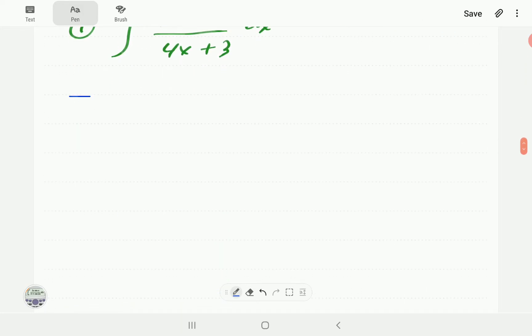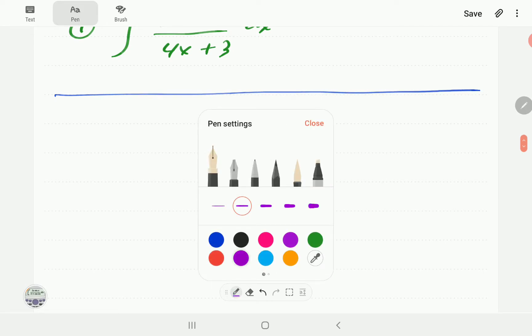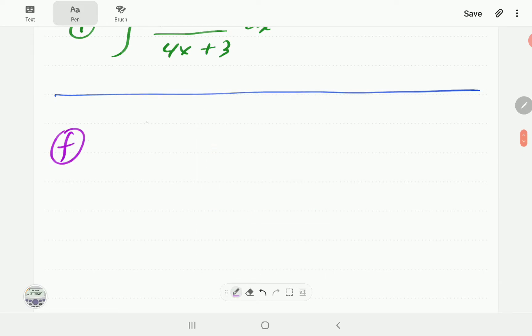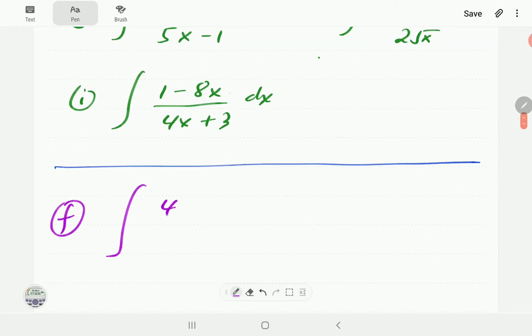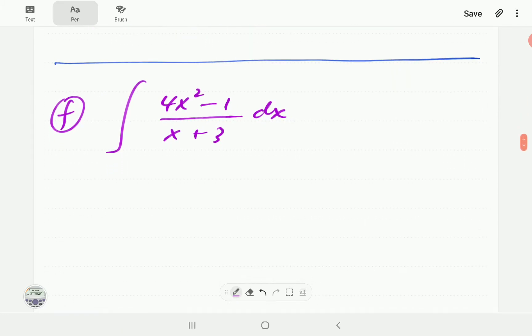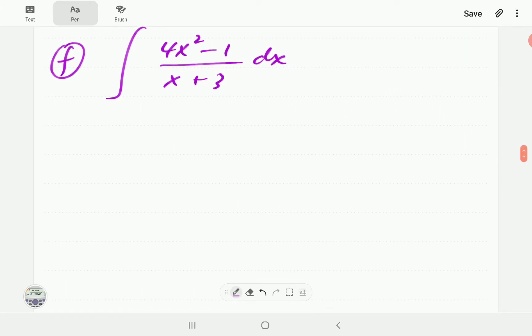In our example number f we have the integral of 4x² - 1 all divided by x + 3. The denominator is linear but the numerator is a quadratic, so that means that our rational expression is improper so we're going to have to divide first.